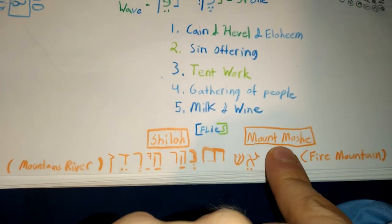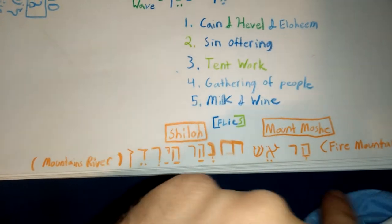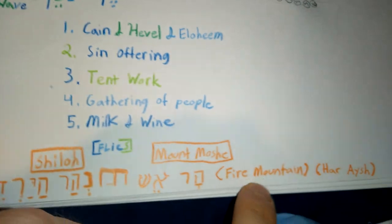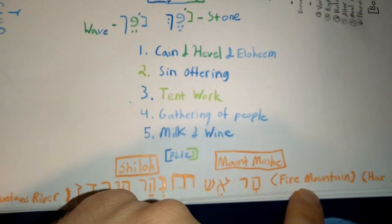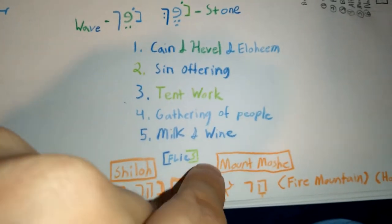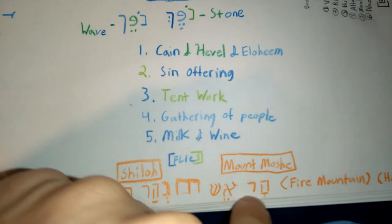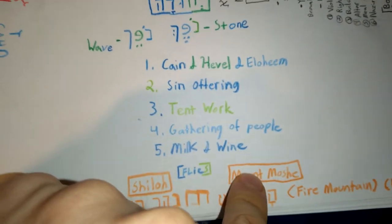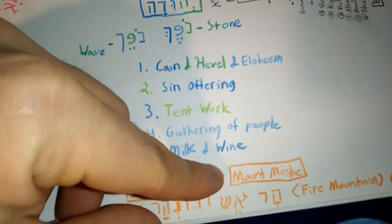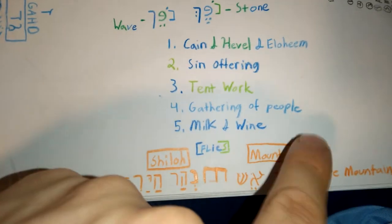Now, you have Mount Moshe. At Mount Moshe, what did you have? You had the Eish Har, or what some would say, Har-Eish. And that is the Fire Mountain. If you can imagine a gigantic flame of orange on a gray mountain, or maybe even a black and gray mountain.